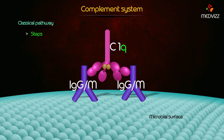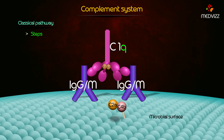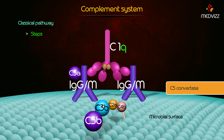In the classical pathway, the activated C1 acts on C4, which splits into C4a and C4b. C1-4b acts on C2, which splits into C2a and C2b. C1-4b-2a is called C3 convertase, which acts on C3, splitting it into C3a and C3b. C1-4b-2a-3b is called C5 convertase, which acts on C5.